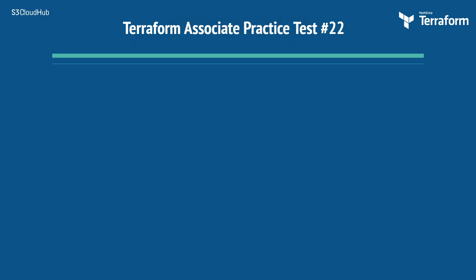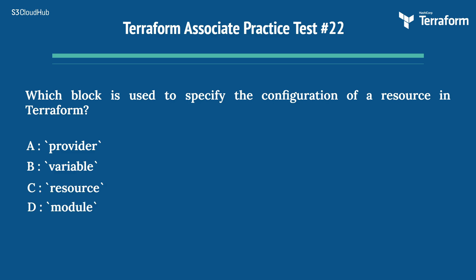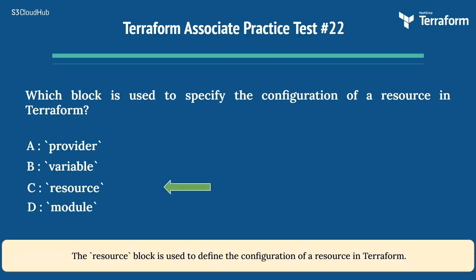Question 22: Which block is used to specify the configuration of a resource in Terraform? Options: A) provider, B) variable, C) resource, D) module. The right answer is C) resource. The resource block is used to define the configuration of a resource in Terraform.